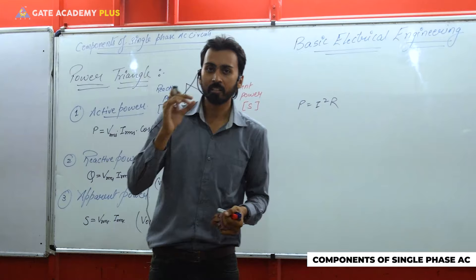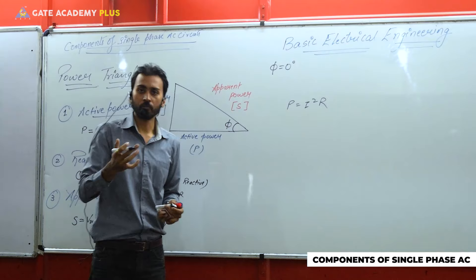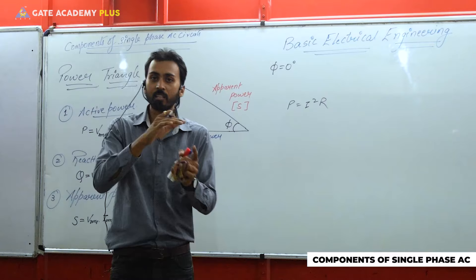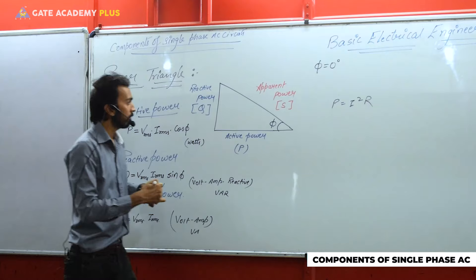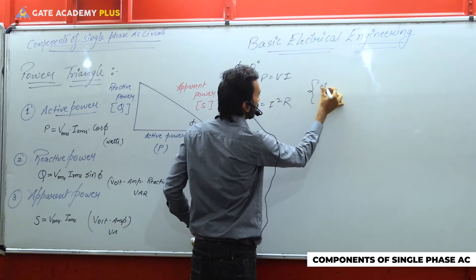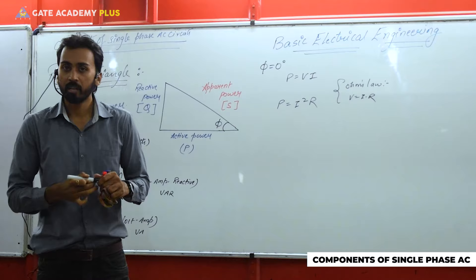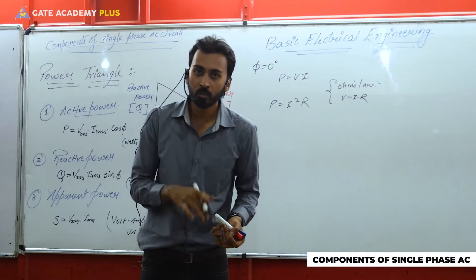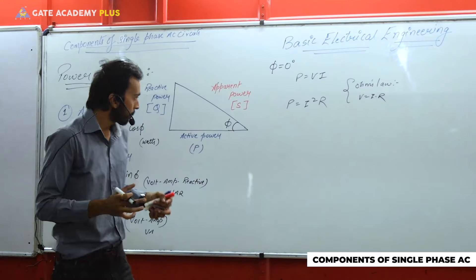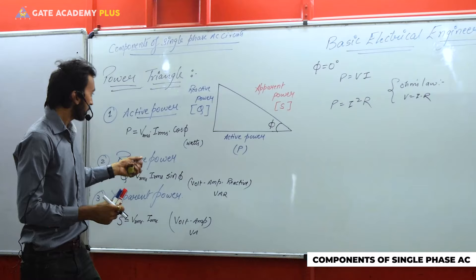When solving DC network questions with purely resistive load, there is no phase difference between supply voltage and current — phi equals zero, cos(0) = 1. So P = V·I. Applying Ohm's law, V = I·R, which gives P = I²R. Ultimately this all derives from the true power formula. So in numericals, unless specifically asked to calculate Q, VAR rating, reactive power, or apparent power, the power you calculate is always the active (true) power.